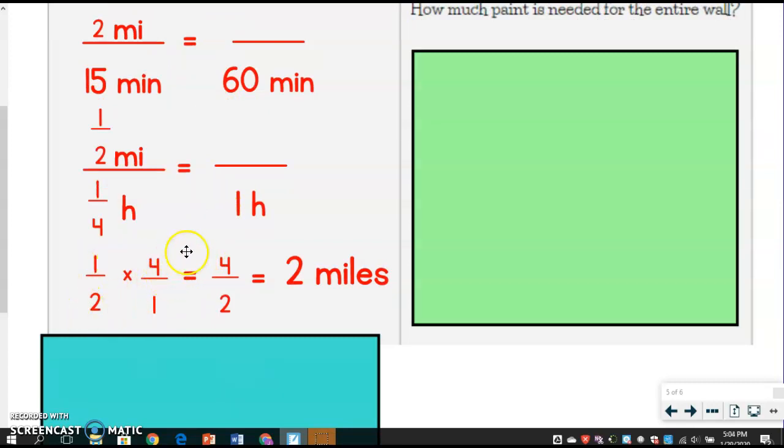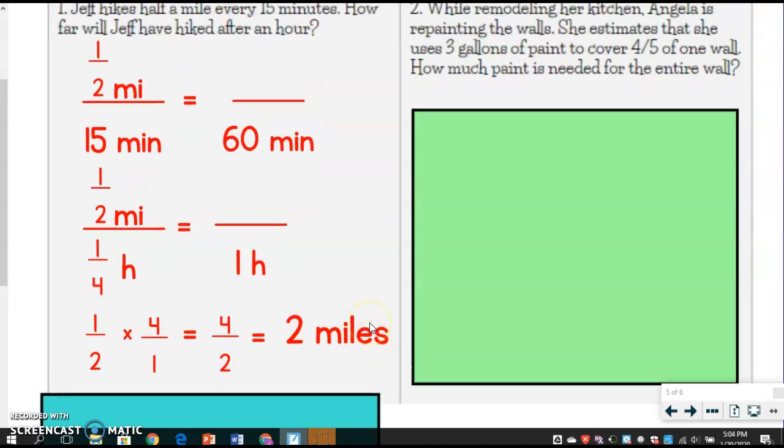So when you do that, you multiply straight across, you get four over two, which simplifies to two miles, which makes sense, right? I would have a half a mile plus another half mile. That gives me a whole mile, but I have to do two more of those to get four altogether, right? So then you'd end up with two miles, okay?